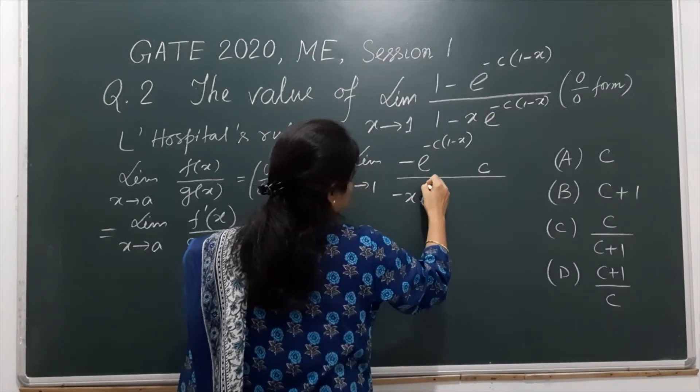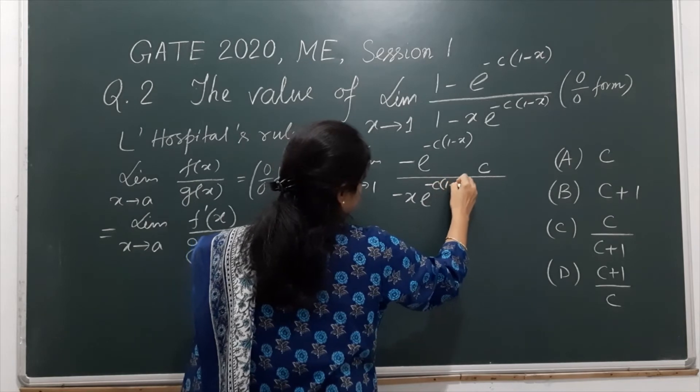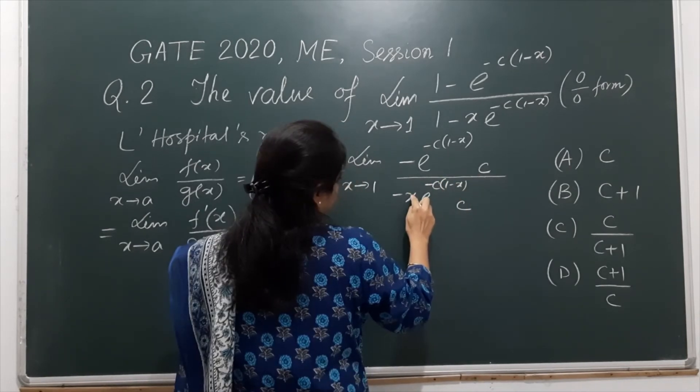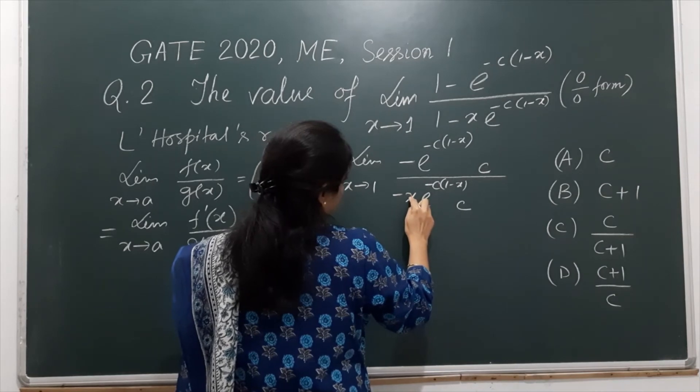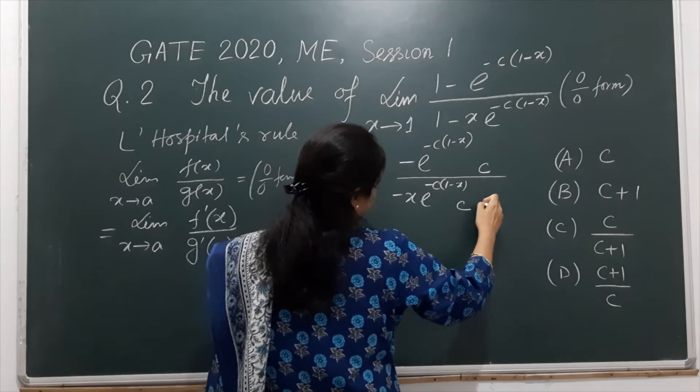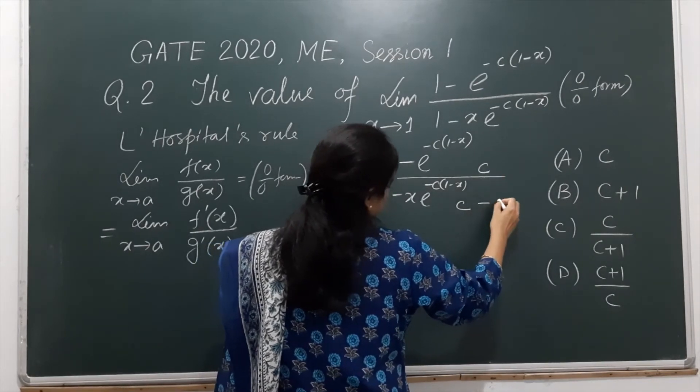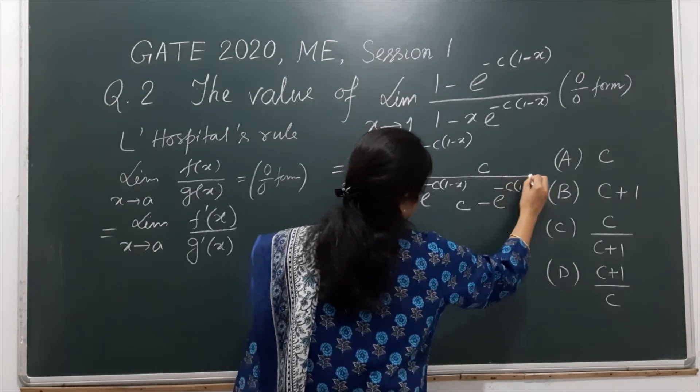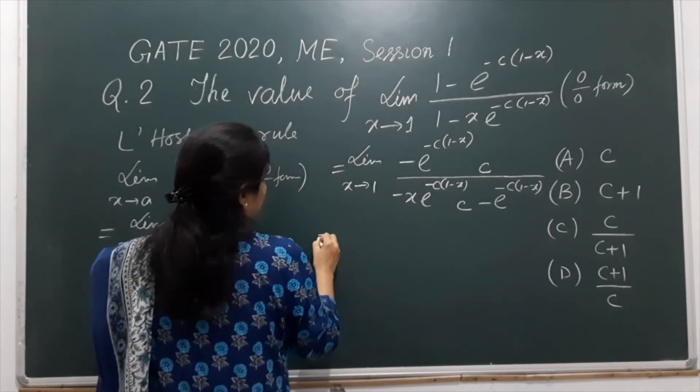So it will be like this, and then differentiation of x is 1 and the exponential term will remain as it is, and plus minus minus so it will be e power minus c of (1 minus x). Now,